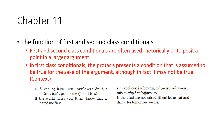The function of first and second class conditionals: first and second class conditionals are often used rhetorically to posit a point in a larger argument. In first class conditionals, the protasis presents a condition that is assumed to be true for the sake of the argument, although in fact it may not be true. For example, 'If the world hates you, then know that it hated me first.' Or, 'If the dead are not raised, let us eat and drink, for tomorrow we die' — where Paul posits a hypothetical to drive the argument to its logical conclusion.